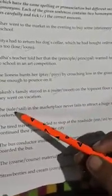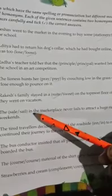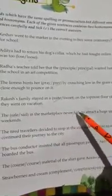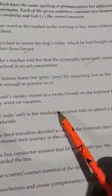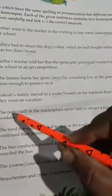Next is, the sale or sail in the market place never fails to attract a huge rush on weekends. Ab, in dono sale mein se hamaara correct option kaun sa hoga? S-A-L-E, sale ka matlab hota hai the action of selling or being sold, kisi bhi samaan ko biechna. S-A-I-L, sail ka matlab hota hai to travel in and control a boat with sails. Bazaar mein weekends ko bohut zyada rush hota hai. So the correct answer is S-A-L-E.